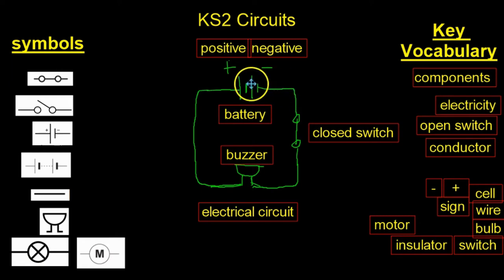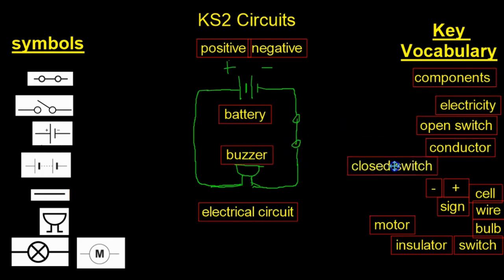As I said earlier, we have the positive end of the battery and the negative end of the battery. We have a closed switch and we have this buzzer. Now, what would happen to the buzzer if we opened that switch? For example, if I took that out, what would happen to that buzzer? Would it still work?